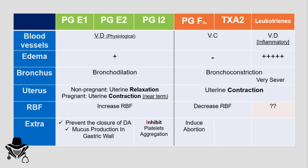Prostacyclin (PGI2) inhibits platelet aggregation, making blood flow more easily — we can remember PGI2 inhibits platelet aggregation. Prostaglandin F2α can induce abortion and is the most powerful eicosanoid that can do that. Thromboxane A2 stimulates platelet aggregation, forming a thrombus. Leukotriene B4, in particular, can act as a chemoattractant.